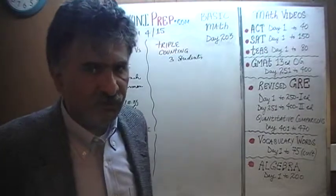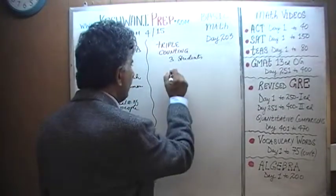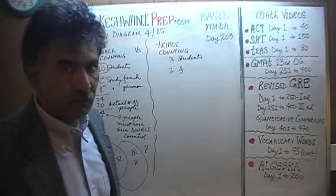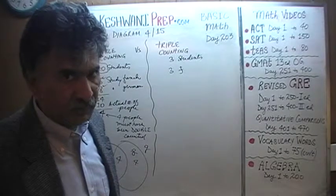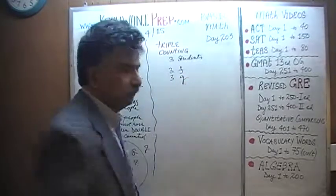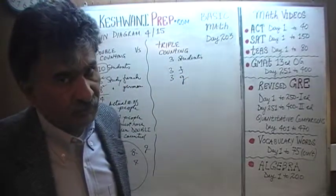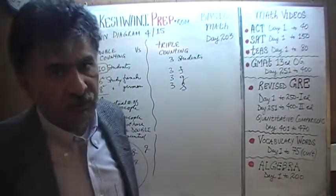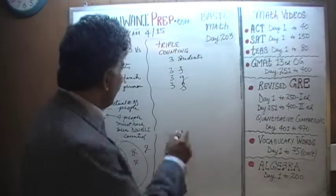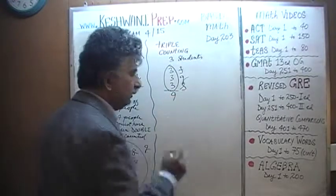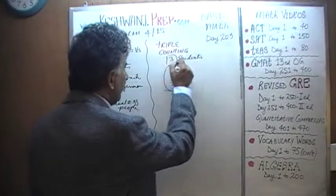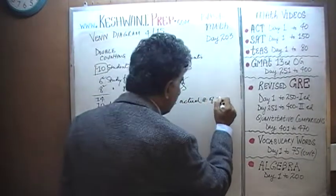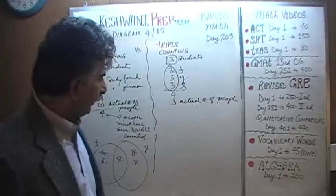We have a group of 3 students. We asked this group: 'Do you study French?' — all 3 of them said yes. We asked the second question to the same group: 'Do you study German?' — and all 3 said yes. We asked the third question: 'Do you study Spanish?' — and all 3 said yes. As you can see, when we add up these 3 figures we get 9. But the actual number of people we have is 3. We have an overflow of 6.